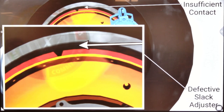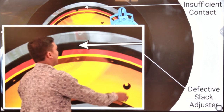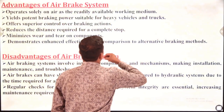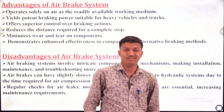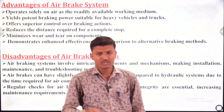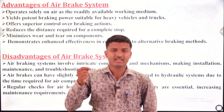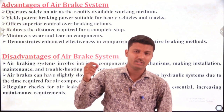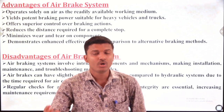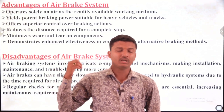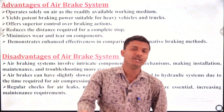To overcome this problem, the defective slack adjuster must be changed; otherwise brake failure will take place. This is the complete discussion about how the air brake works and how to overcome disarrangement from prolonged use by changing the slack adjuster.